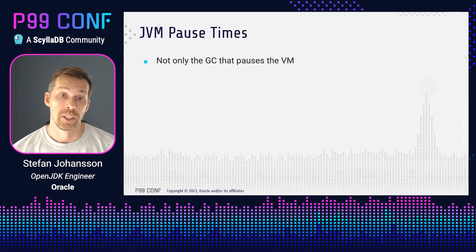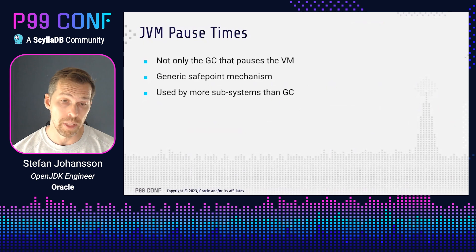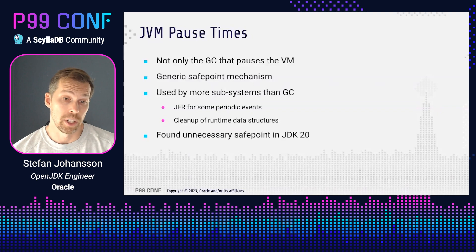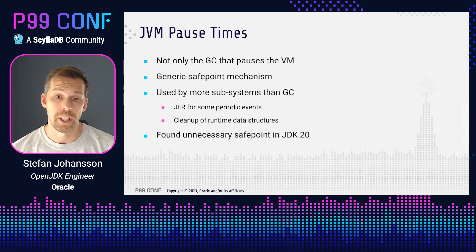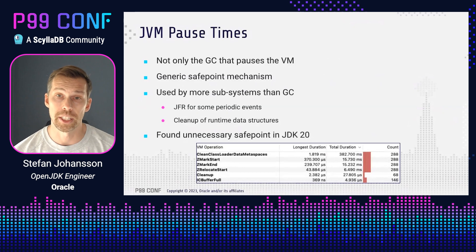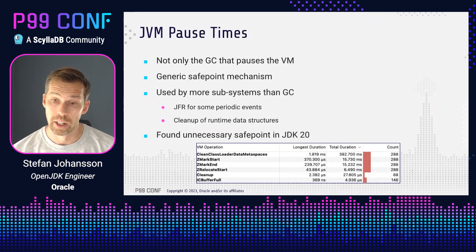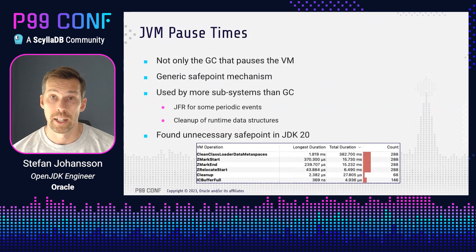Overall the GC pause times are pretty similar and we don't see anything that could explain the big difference in application latencies. GC is of course not the only thing in the JVM that pauses Java threads — there is a generic safepoint mechanism that can be used by many other subsystems as well. For example, JFR uses it for some periodic events, and a lot of other things like cleanup of runtime data structures. When developing generational ZGC we actually found an unnecessary safepoint that was being executed very frequently. Looking at the pause time breakdown for a JDK 20 run using JDK Mission Control, we see the 'clean class loader data metaspaces' pause at the top.